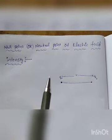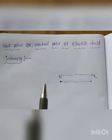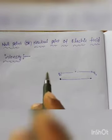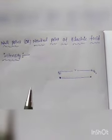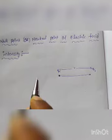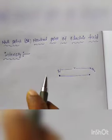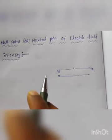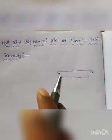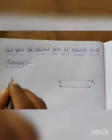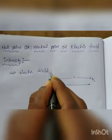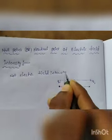Hello students, this is a continuation of electric field intensity. Based on the previous video covering what electric field intensity is and how electric field lines work, we will now look at an application: the null point or neutral point of electric field intensity, which is a point where the net electric field intensity is zero.